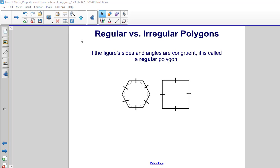Regular versus irregular polygons. If the figure sides and angles are congruent it is called a regular polygon. If we look at the hexagon here you'll notice the markings on the sides indicate that all six sides are the same length, and the semicircles within each angle show that all six angles are the same measure. Since all the angles and sides are congruent this is a regular hexagon.